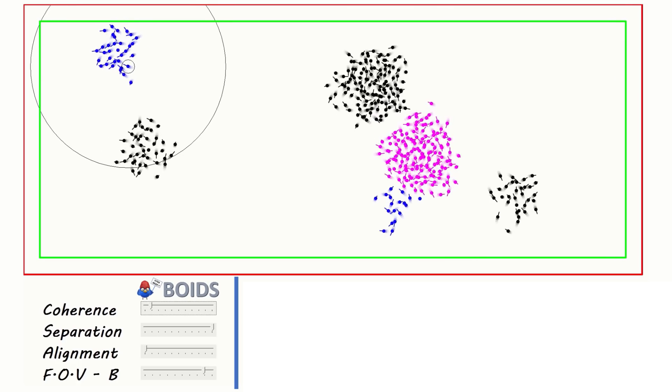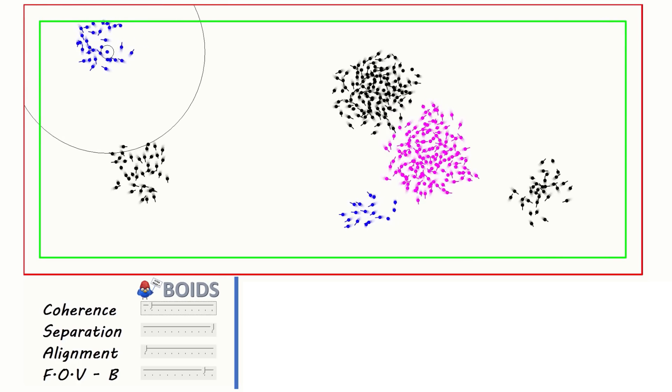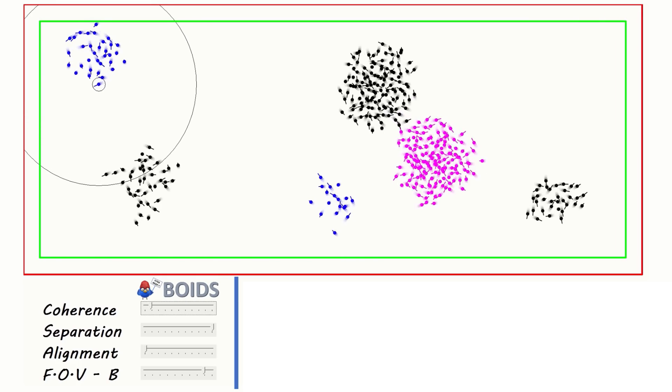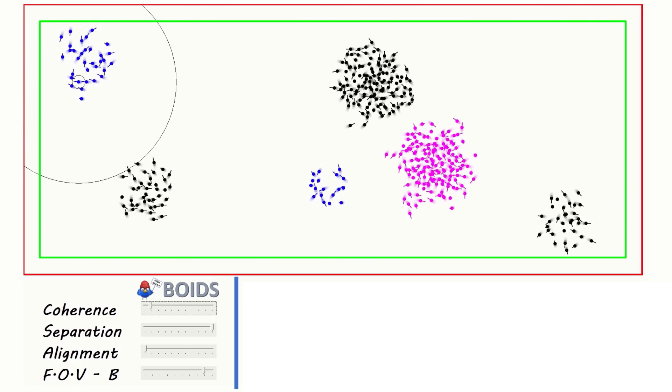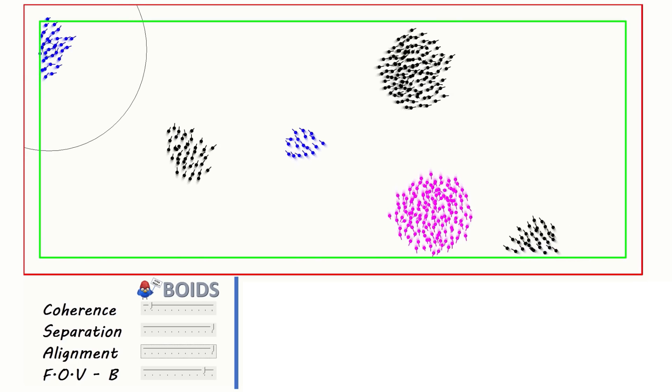Next up is the separation function. No change is required here, as I want them to be able to avoid all birds, regardless of the flock they're in. Just as you see in nature, they aren't picky about what they don't fly into.